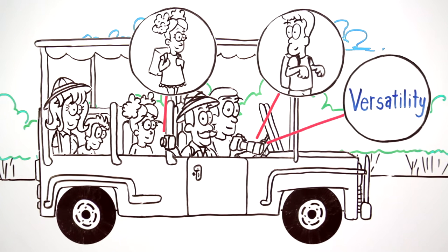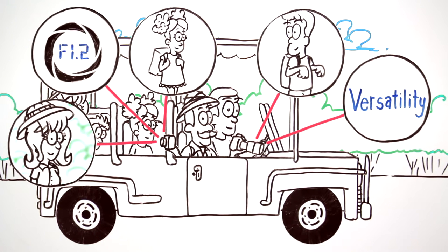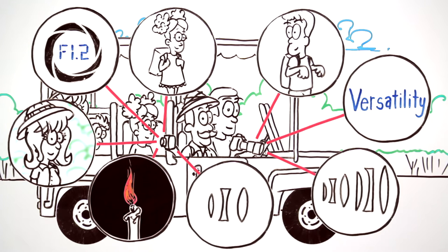Zoom lenses offer versatility, but prime lenses often have a larger maximum aperture, which allows for shallower depth of field and higher shutter speeds in low light settings. They also have fewer lens elements, so they tend to be smaller and lighter than zoom lenses.